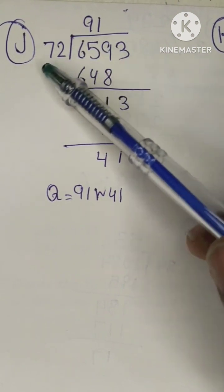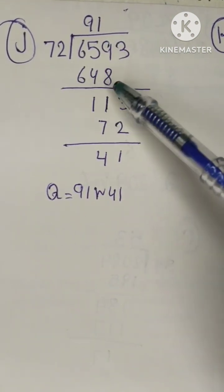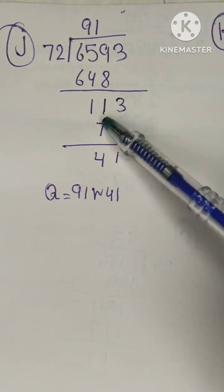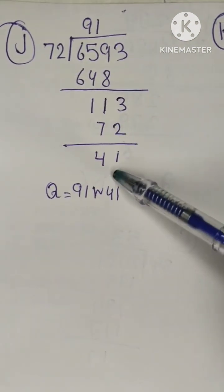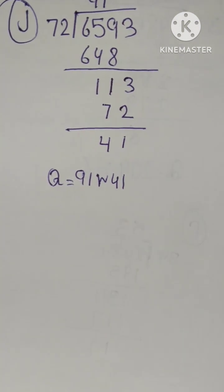This is our next question: 72 multiply by 9 is... quotient 91 and remainder is 41.